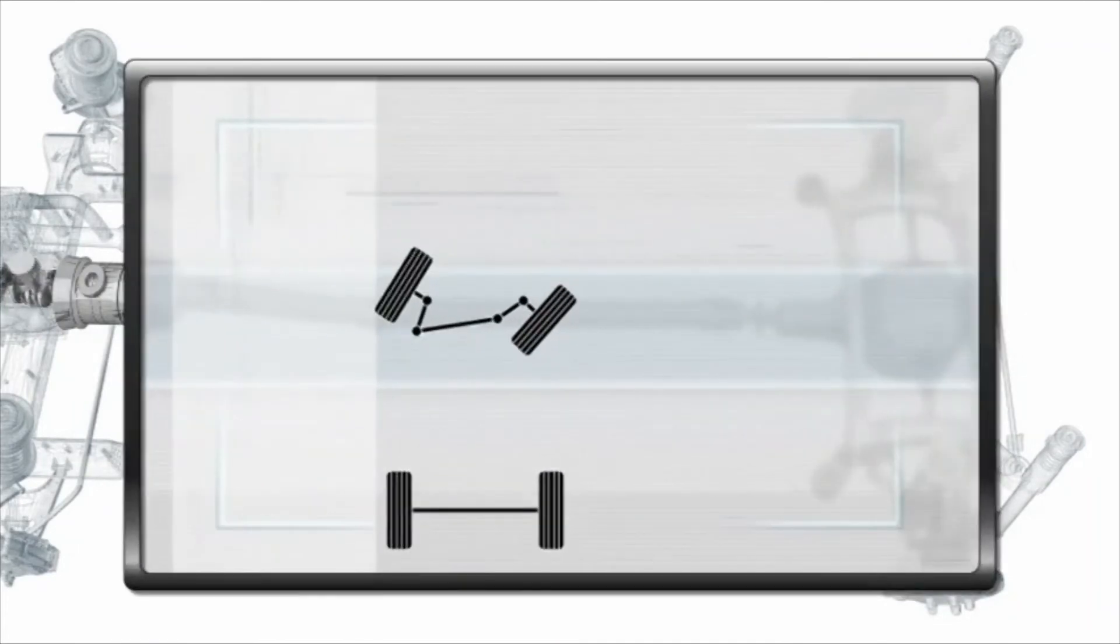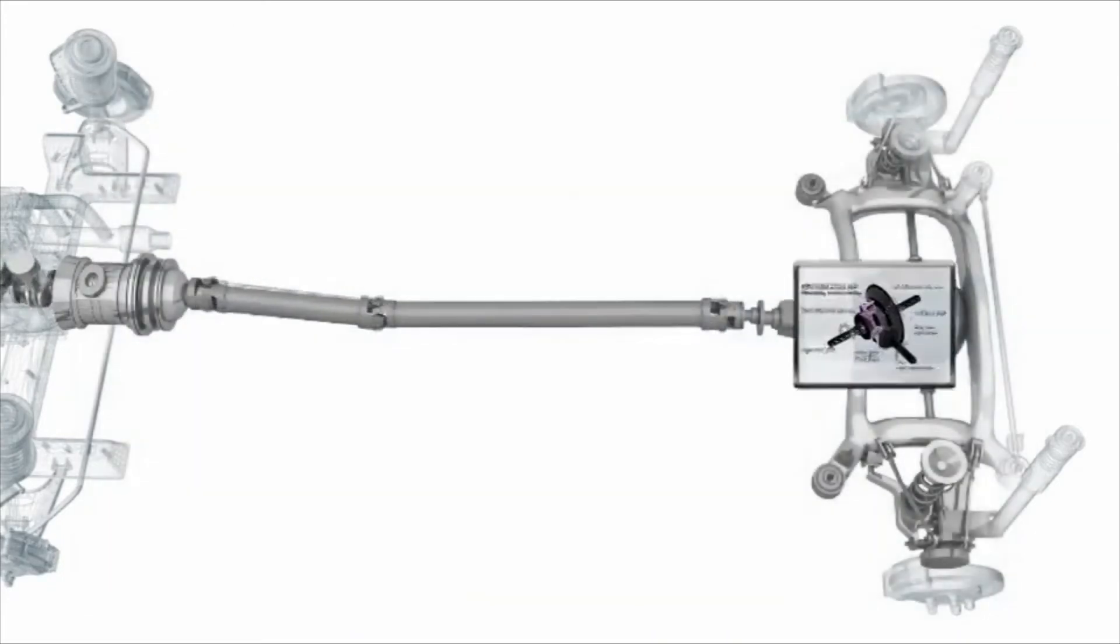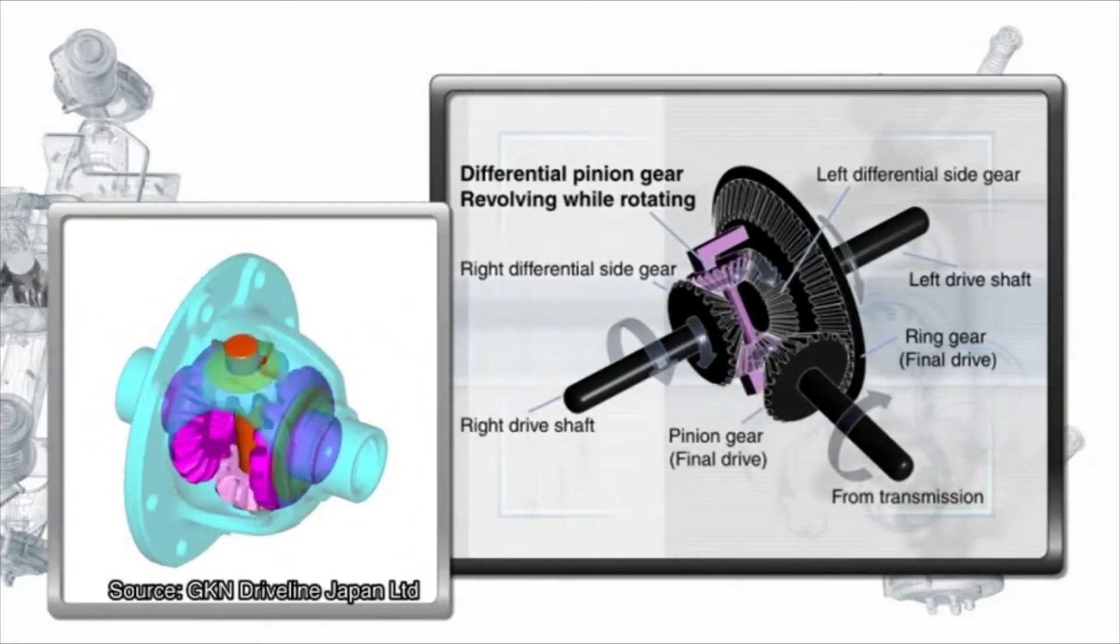When a car makes a turn, the outside tires require a larger turning radius than the inside tires. As a result, the inside tires must rotate at a slower rate than the outside tires. The differential allows a pair of wheels to rotate at different speeds while driving them with equal force.